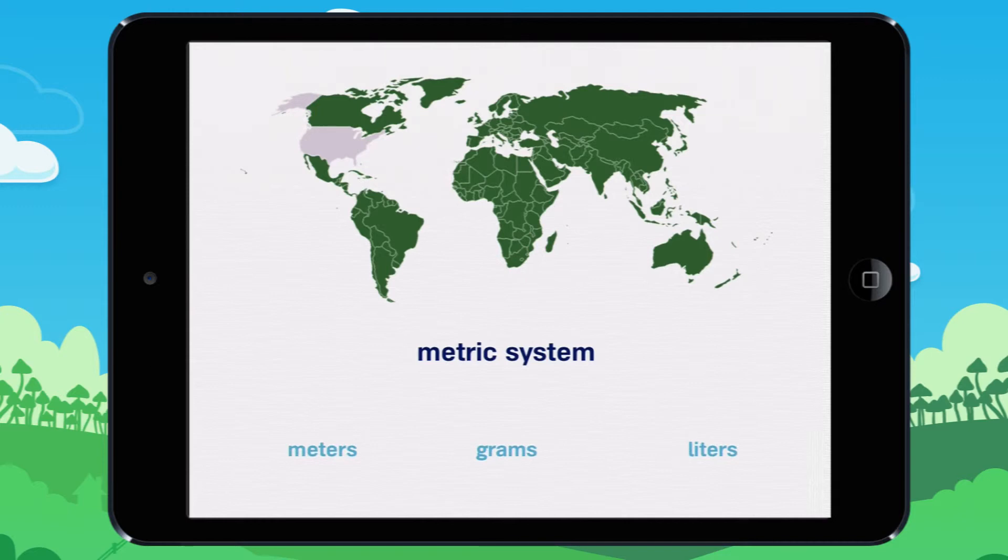Metric units are, for example, meters, grams, or liters. Let's look at some units of length and what you can measure with them.